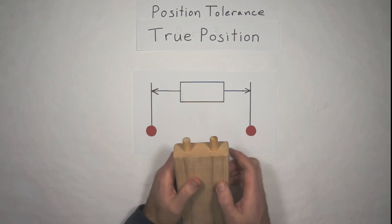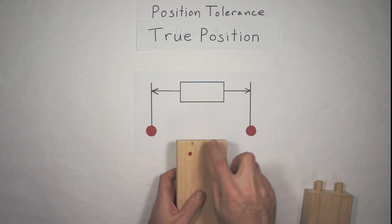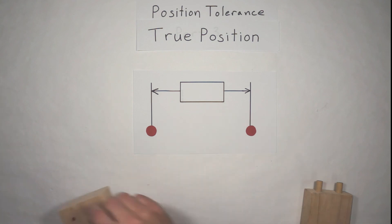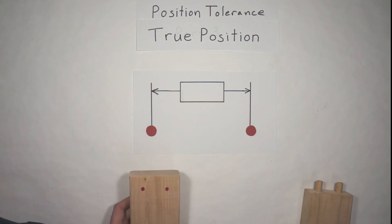But we're basically putting features, you can think about those two bullseyes, like they're drawn on the part with that basic dimension between the centers of those, and those are your targets for the center of your feature, whether you're drilling it or machining a boss on there.